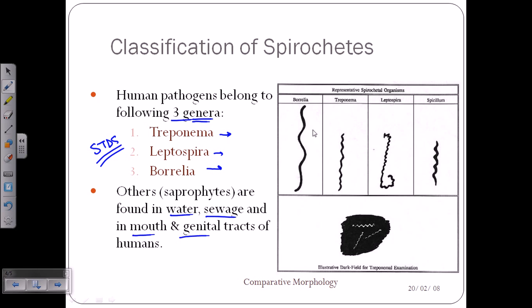Looking at morphological characteristics: Borrelia is the largest among them and has a flat spiral. Spirillum is very short but has a very curvy nature. Leptospira has the most curvy nature of all and is rounded at one end. Treponema has a basic curvedness. Treponema and Leptospira are similar in length, but Borrelia is larger with a flat spiral, while Leptospira bends at one terminal. These can be visualized in dark field microscopy.